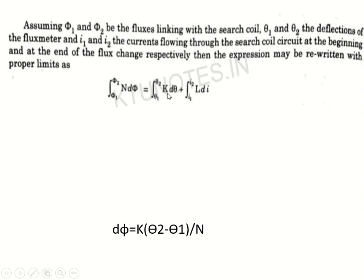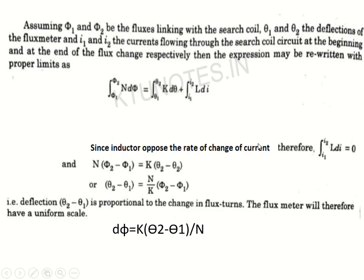Substituting the limits: integral from Φ1 to Φ2 of N dΦ = integral from θ1 to θ2 of K dθ + integral from i1 to i2 of L di. Since the inductor opposes the rate of change of current, the integral from i1 to i2 of L di equals zero. Therefore: N(Φ2 − Φ1) = K(θ2 − θ1), giving the change in flux as: ΔΦ = (K/N) × (θ2 − θ1). This is the equation for change in flux linkage obtained from the flux meter.